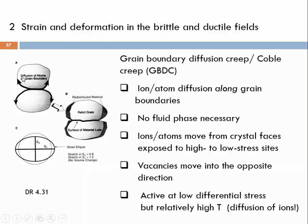We see here very sketchy examples of the process as such. You see here two grains meeting each other at a high stress point, and let's assume the largest stress is acting vertically. Ions that are exposed to the stress concentration at the interface of these two grains will tend to redistribute. Diffusion, if temperature is high enough, will or may occur along the grain boundaries — grain boundary diffusion creep.